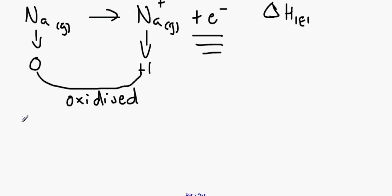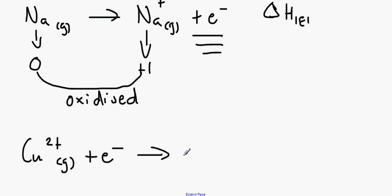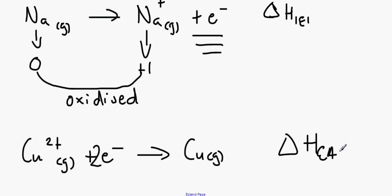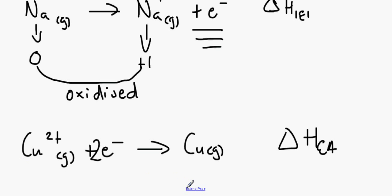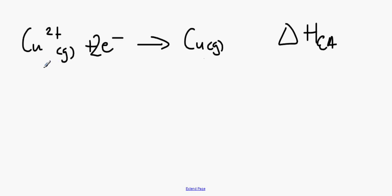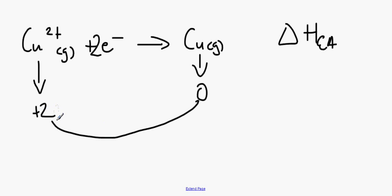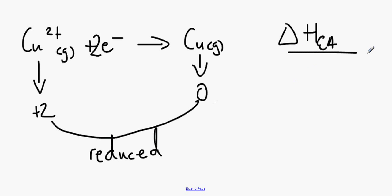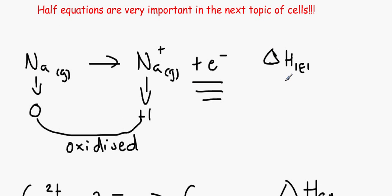If we had a reduction example — Cu²⁺ (gas) + 2e⁻ → Cu (gas), with ΔH IE1 and IE2. As we can see, we are gaining electrons, so therefore this is a reduction. The oxidation state of Cu²⁺ is +2, and the oxidation state of Cu is 0. The number has decreased, we have gained electrons, and therefore we have reduced this. Usually in electron affinities it is a reduction process; for ionization energies, it is usually an oxidation process.